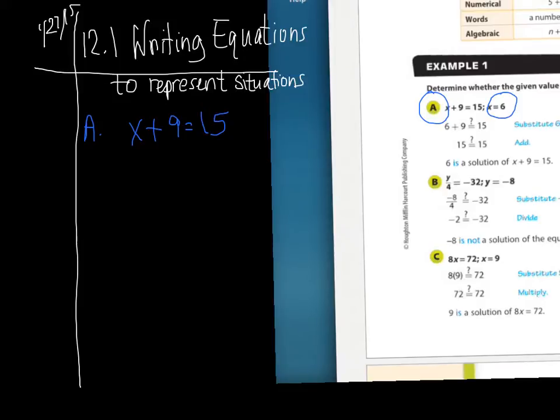So you're going to take out the x, and you're going to put a 6, so rewrite the equation, 6 plus 9 equals 15. Now, is that true? Yes, it is. So you would say x equals 6, because it is true. Let's look at b.